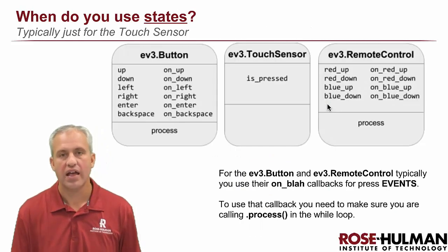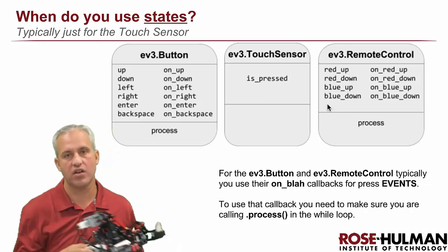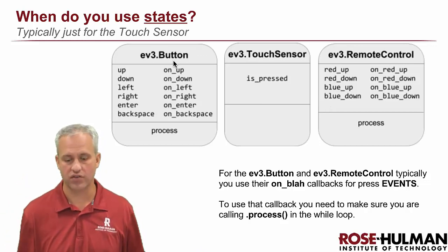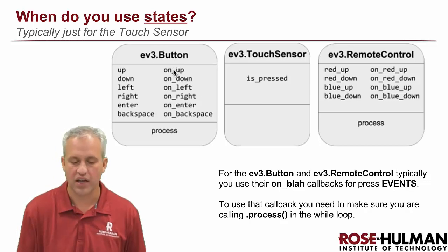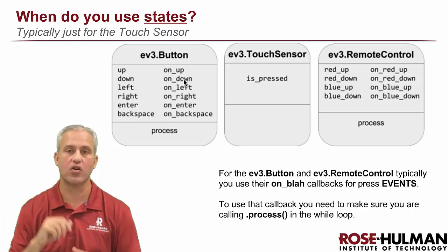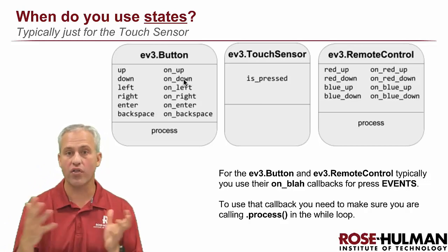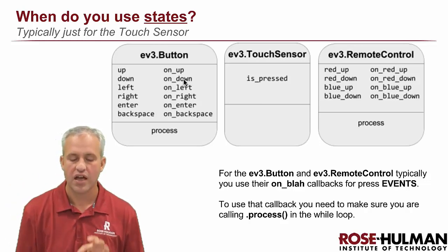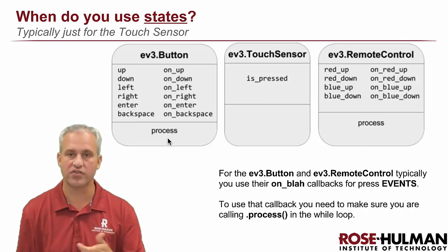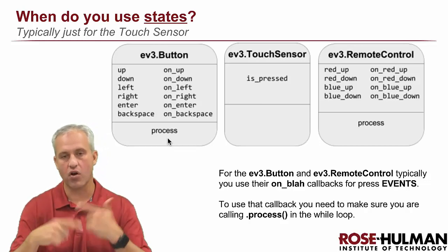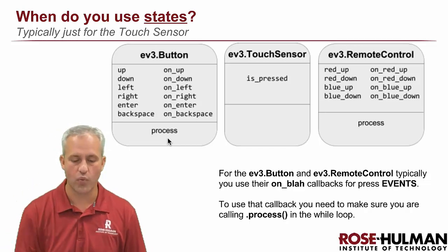In general, you only use the touch sensor with states because that's all it can do. Buttons and remote control you're going to use with events. The way you use events is you connect some function to `on_up` — a function that gets called when the up button is pressed. It also calls it when it's released, so it calls the function twice for those events. In order for that magic to work, you have to be calling `.process` within the while loop.